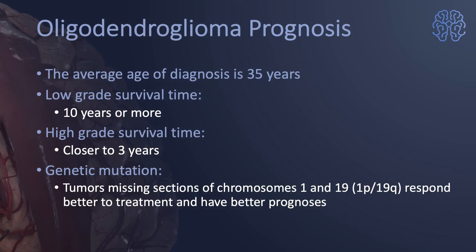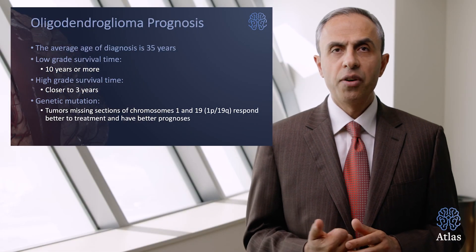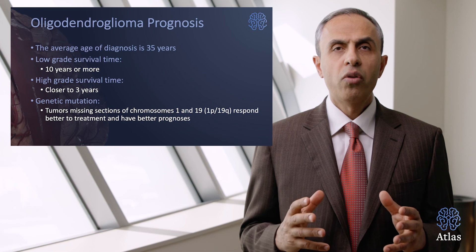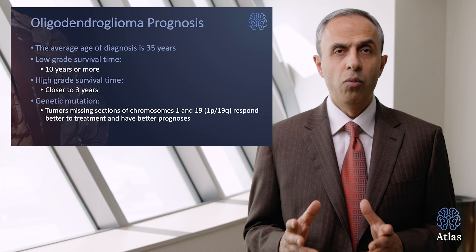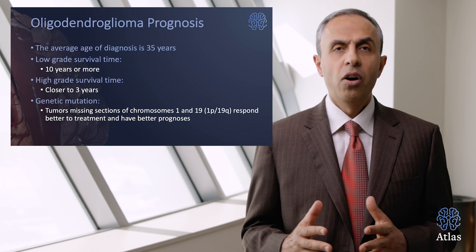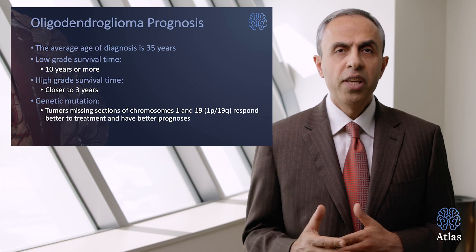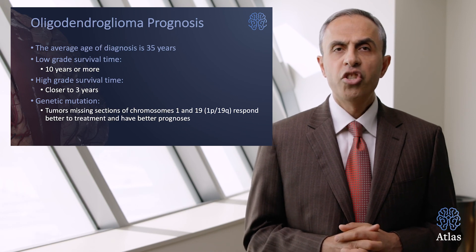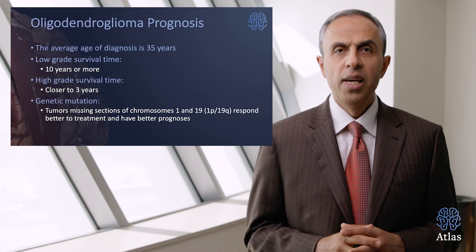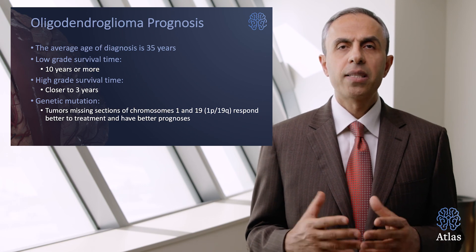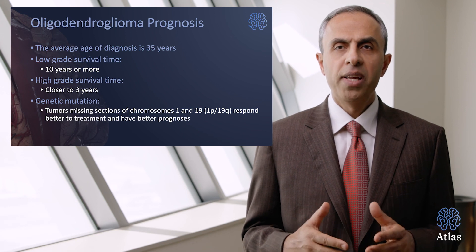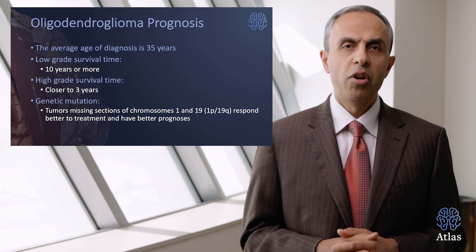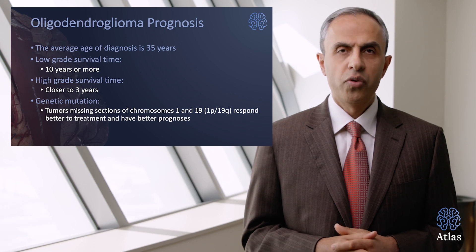What is the prognosis for oligodendrogliomas? The average age of diagnosis is 35 years. Low-grade tumors are associated with survival times of 10 years or more. Unfortunately, higher-grade tumors are closer to three years or more. Certain genetic mutations within the tumor — specifically deletions of chromosomes 1p and 19q — are associated with better prognosis and better response to treatment.